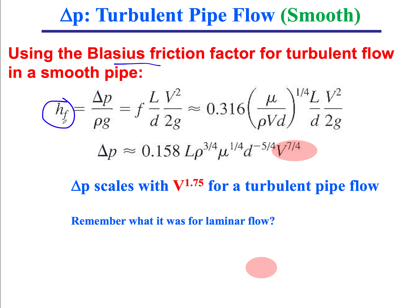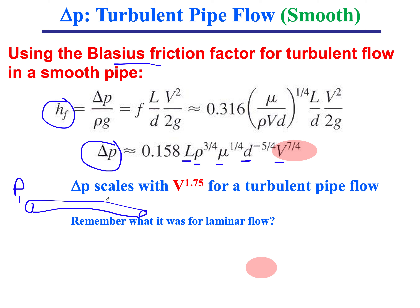Taking the Blasius friction factor and computing the friction head loss hf, we find that rho·g·hf — which is the pressure drop delta_p — for a pipe of length L, diameter D, fluid density rho, viscosity mu, and velocity V, the pressure drop scales as V to the 1.75 power. So the pressure drop in a smooth turbulent pipe flow goes with almost velocity squared, specifically V^1.75.